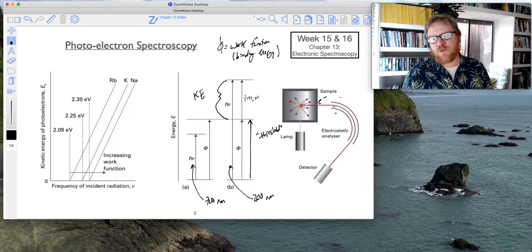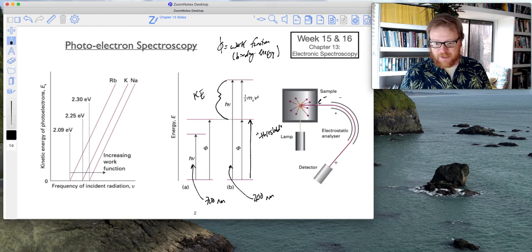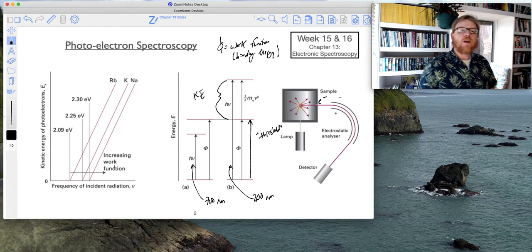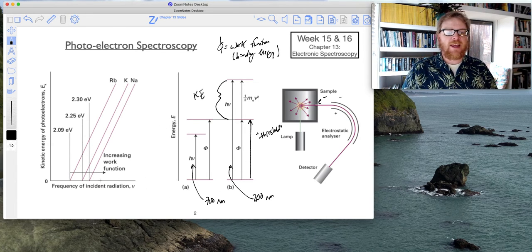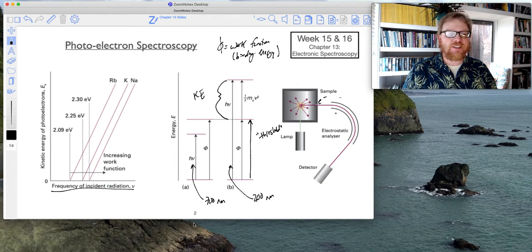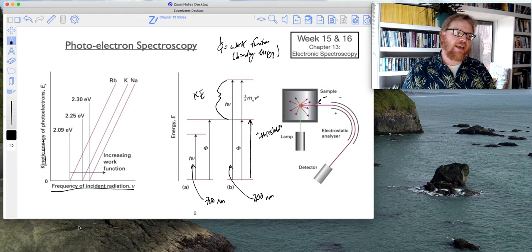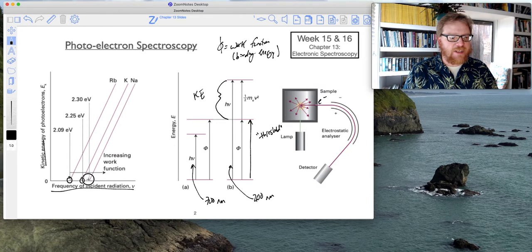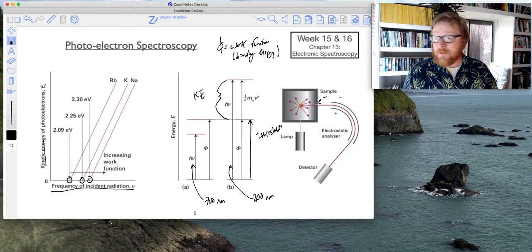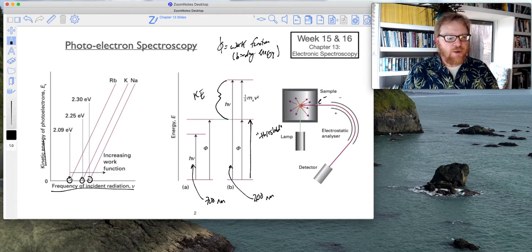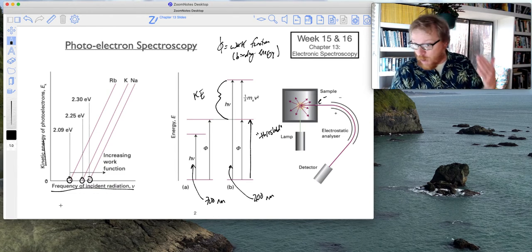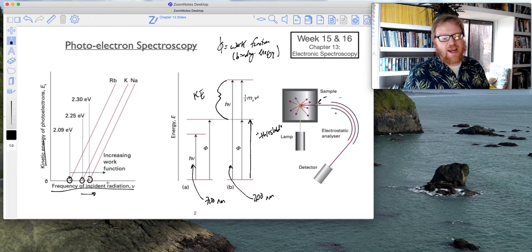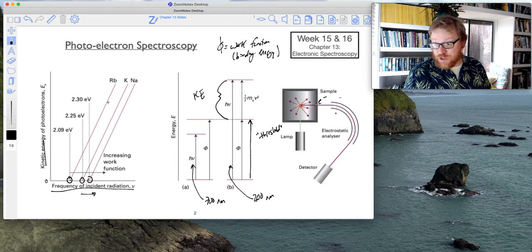Those photoelectrons can be sent through what we call a hemispherical energy analyzer, which I'll show you on the next slide. Then those electrons' kinetic energies are detected. As it turns out, if you increase the frequency of incident radiation, you'll see a linear increase in the kinetic energy of the photoelectrons. This intercept gives us the threshold ionization because if we backtrack all the way down, this corresponds to an electron with zero kinetic energy, which is exactly what you need for threshold.